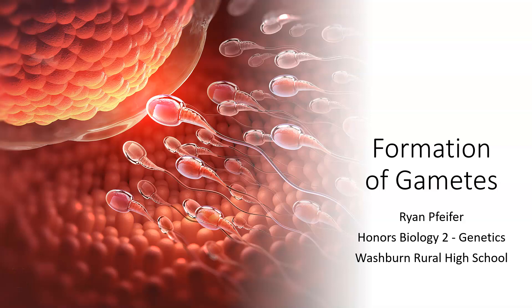Hey, Mr. P here. In this video we're going to talk about the formation of gametes — how mitosis and meiosis specifically allow males and females to produce gametes, meaning the sperm cell and egg cell. Those are the cells involved in sexual reproduction and require a certain set of divisions to reduce the number of chromosomes and allow them to mature into viable sex cells. So formation of gametes — let's go.